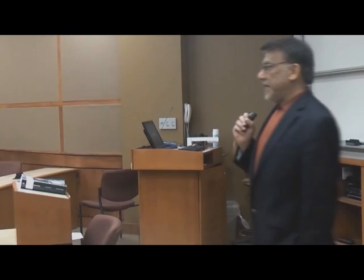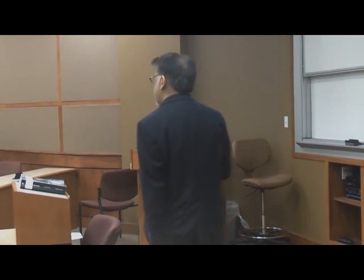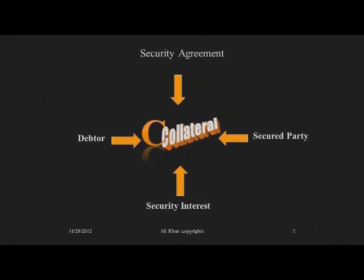There are three characters without which no secured transaction can come into existence: two persons and a piece of property. These three characters are the debtor, the secured party, and the collateral. These three characters must always be present in a secured transaction. You cannot have a secured transaction if any of them is missing.